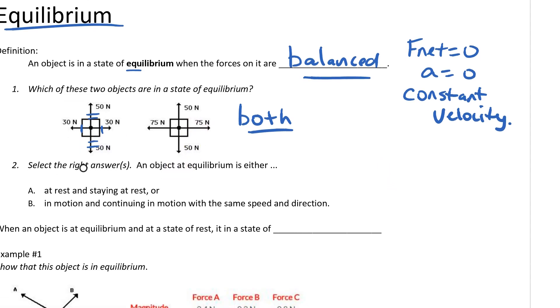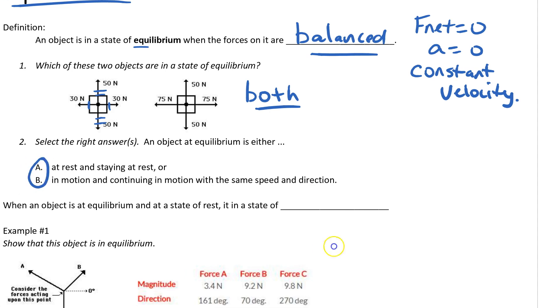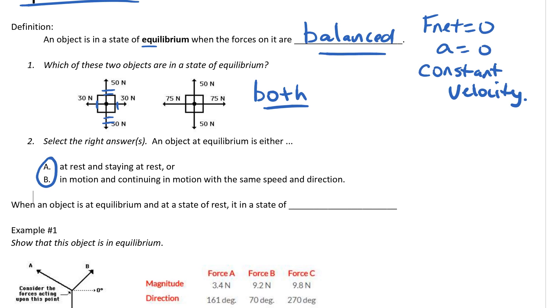Take a look at number two. It says select the right answer or answers. An object at equilibrium is either A, at rest and staying at rest, or B, in motion and continuing in motion with the same speed and direction. And your answer is yes, again, it's both of them. As long as it has a constant velocity, it could be zero or it could be in motion.